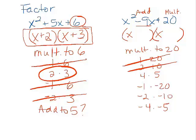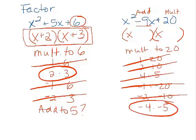Which of these in the list add up to negative 9? Nope. Nope. Oh, that's positive 9. Close. Nope. Nope. Ah, there it is. So we have our factors of x minus 4 and x minus 5.